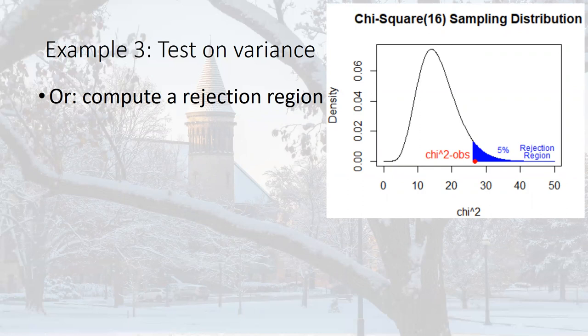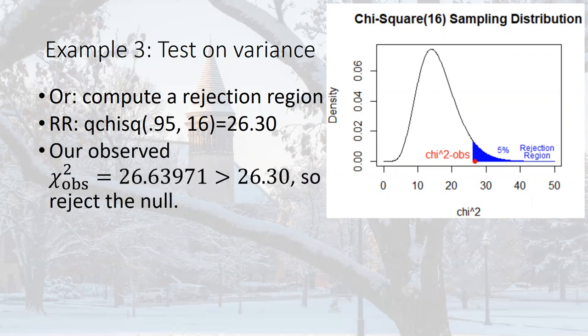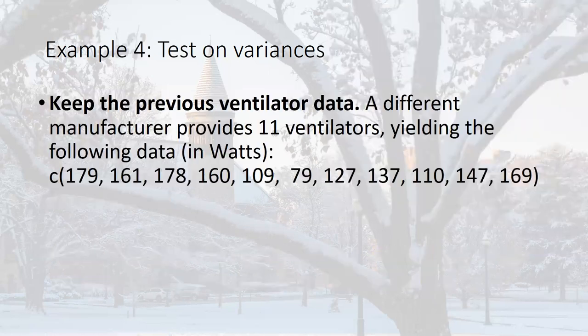As review, computing a rejection region using the 95th percentile of chi-square 16 via qchisq gives 26.30. Our observed chi-square of 26.63 is just barely in the blue rejection region, so we reject the null — the same conclusion as the p-value approach. As long as alpha is the same in both methods, we reach the exact same conclusion. The observed statistic is just barely inside the rejection region.